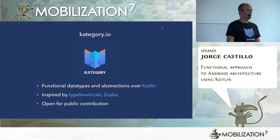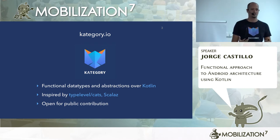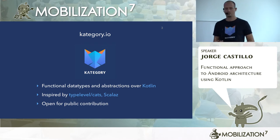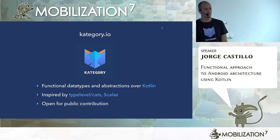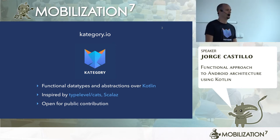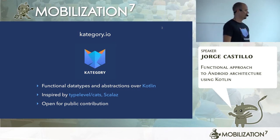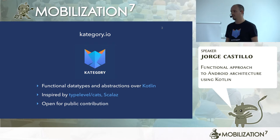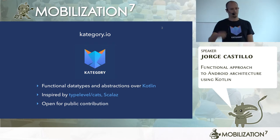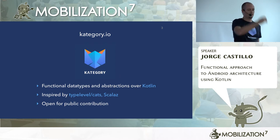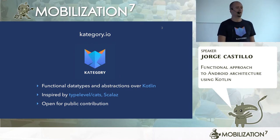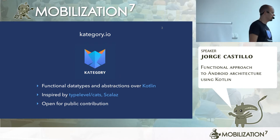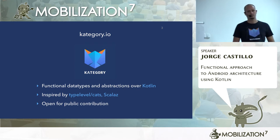So we started thinking about creating a library over the language to provide data types and abstractions to do functional programming over Kotlin. It's inspired by some well-known libraries in the functional programming world, like ScalaZ and type-level cats. It's open for public contribution — people like Raul Raja and Paco Estevez have been contributing a lot since day one. We've been working on it for around seven months, and it's starting to look very good and very close to a final stable release.